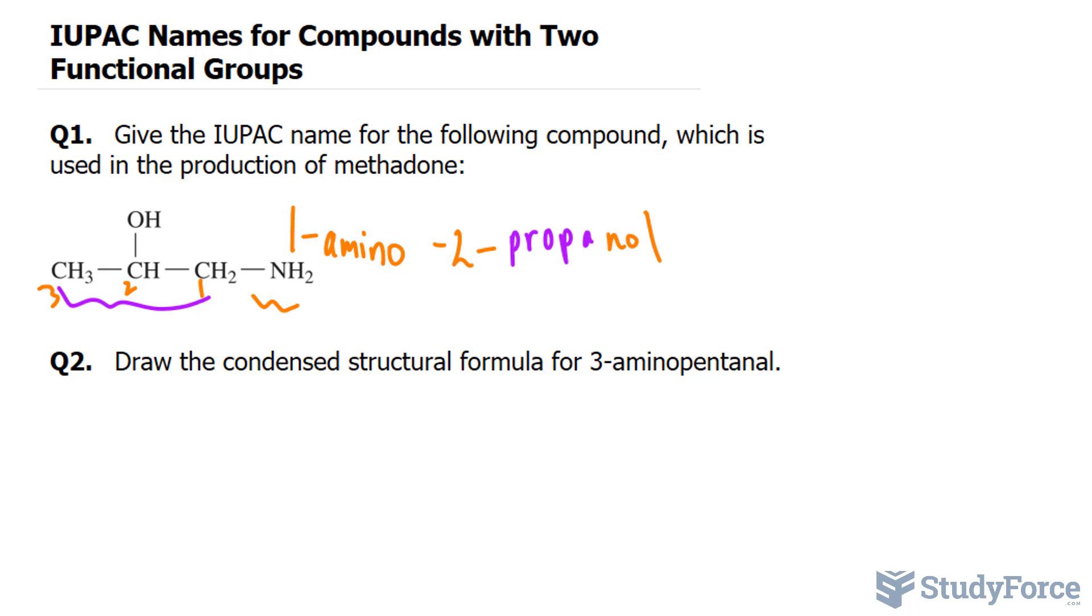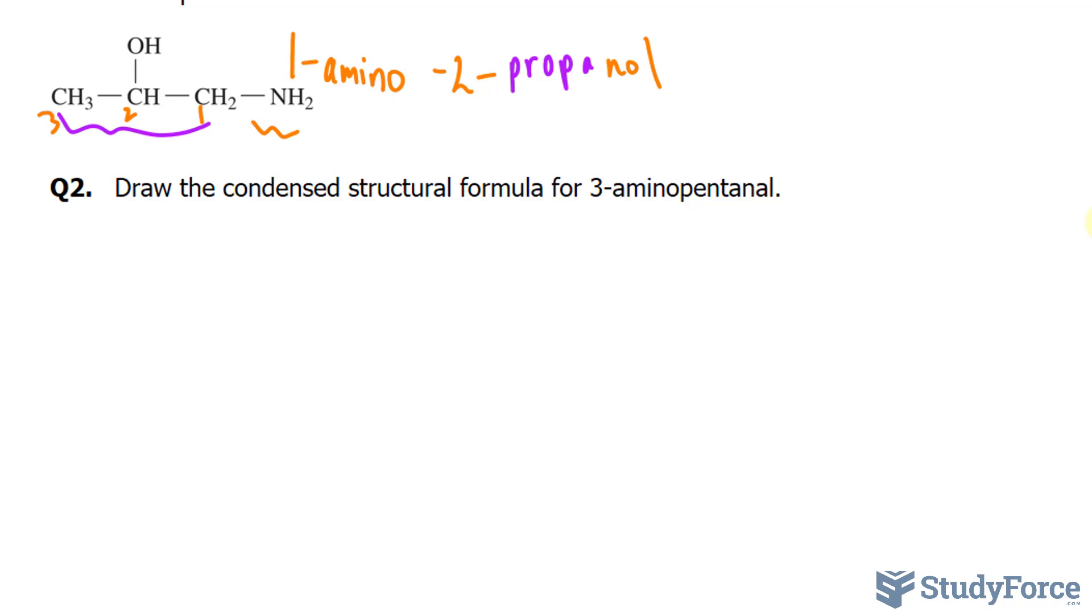Let's move on to question 2. Draw the condensed structural formula for 3-aminopentanal. As you can tell just from the name, the compound is an aldehyde. We have AL at the end. And aldehydes have higher priority than amine groups. So we know we have two functional groups here: an aldehyde somewhere at the end of the molecule and an amine group at the third carbon.